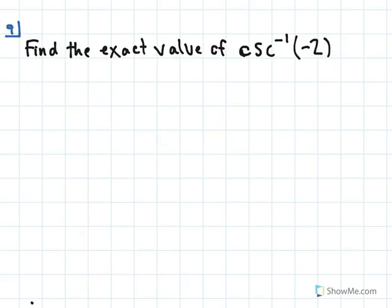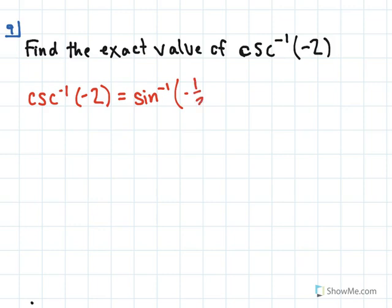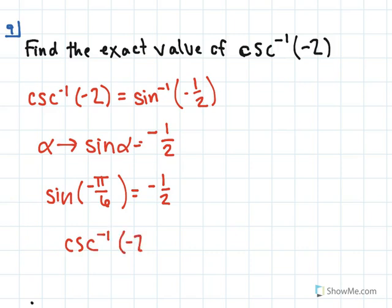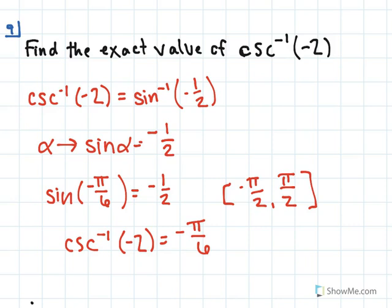In this problem we're asked to find the exact value of cosecant inverse of negative 2. It's important to remember that cosecant is the reciprocal of sine, so cosecant inverse of negative 2 can be rewritten as sine inverse of negative 1 half. We're looking for theta such that sine of theta equals negative 1 half. From the unit circle, sine of negative pi over 6 equals negative 1 half. So cosecant inverse of negative 2 equals negative pi over 6. Remember, with inverse sine we're restricted to the interval negative pi over 2 to pi over 2.